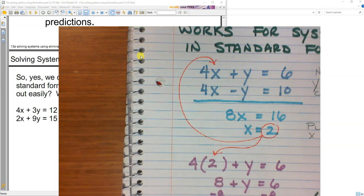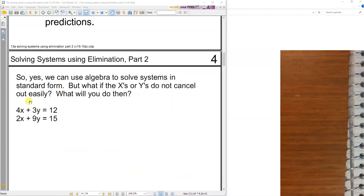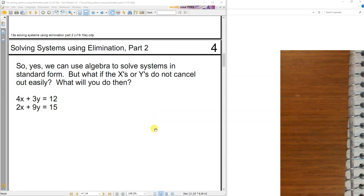But now, look at this, the x's aren't going to cancel, and the y's aren't going to cancel. So do I just give up and start crying? No. There's another way to do this.